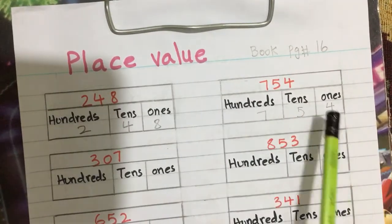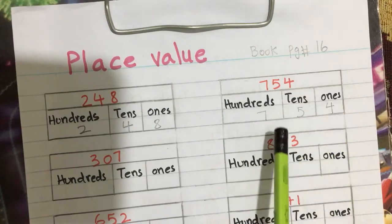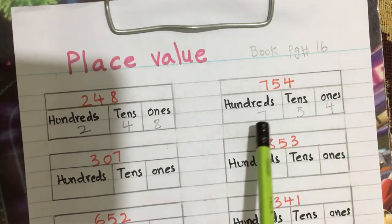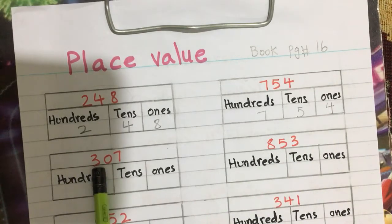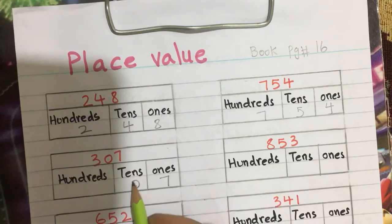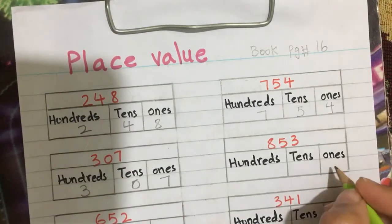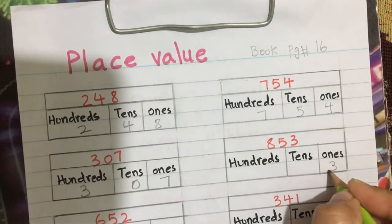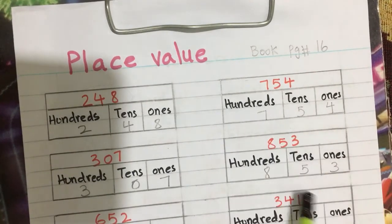This number 754 is seven hundred and fifty-four. Another number is 307. Writing place values: seven, zero, three — this is three hundred and seven.